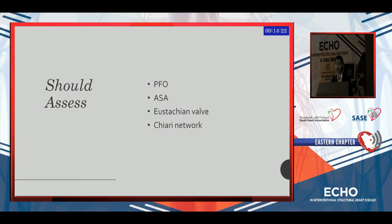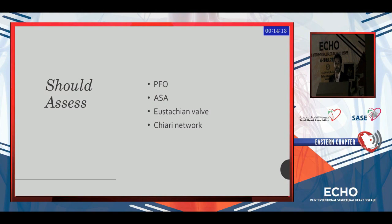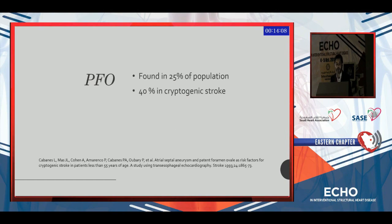So what should we assess? It's not only PFO. When assessing PFO mainly for stroke, we should assess the PFO, atrial septal aneurysm, Eustachian valve, and Chiari network, because all contribute to stroke.